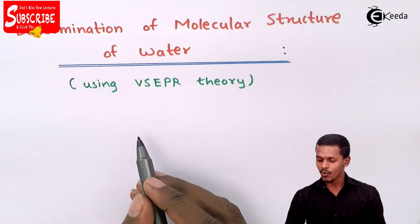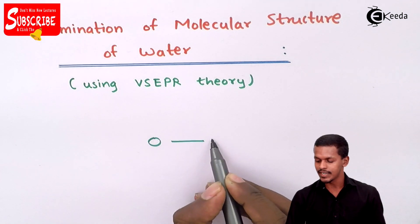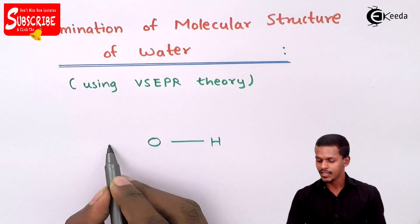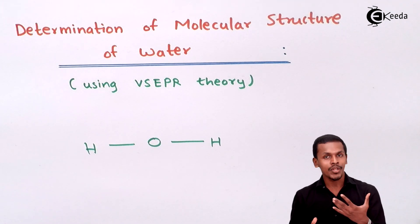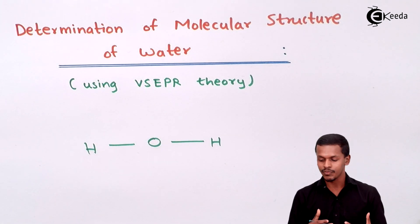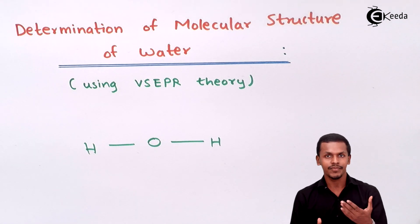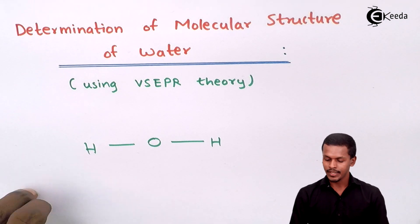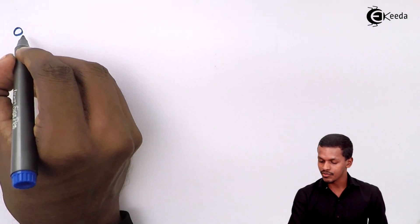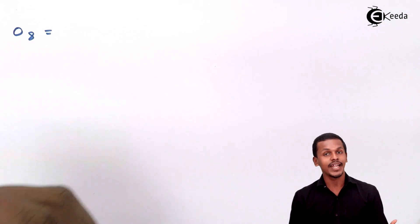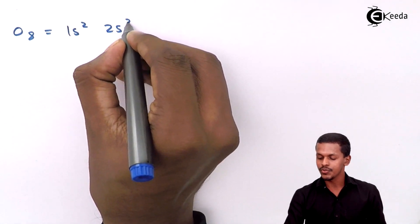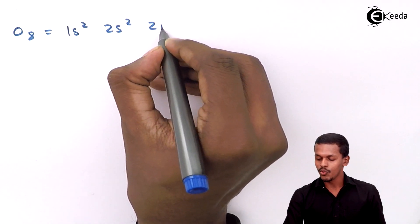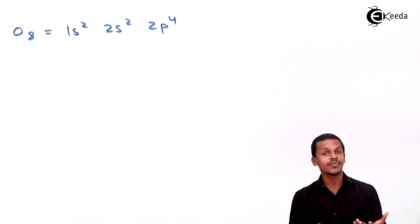In water, as we know, oxygen is basically the central atom. So that is the reason we are now going to discuss the electronic configuration of oxygen first, and then we will move to the further part. Oxygen has an atomic number of 8, and the electronic configuration can be written as 1s², 2s², and 2p⁴.